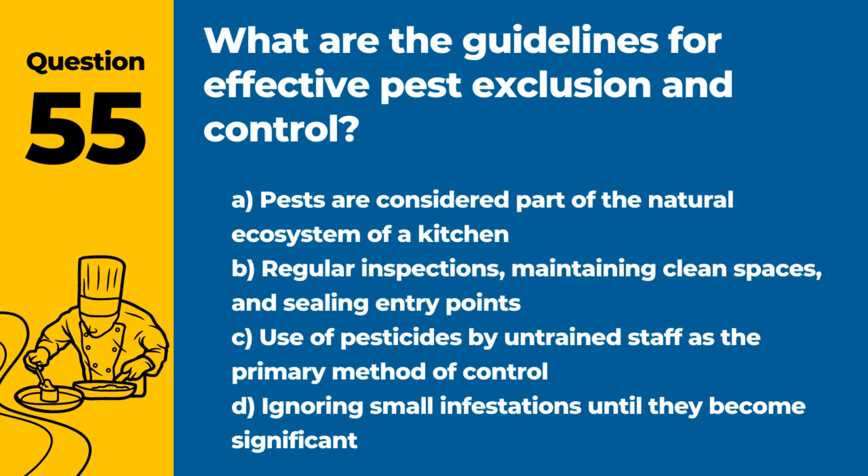Question 55. What are the guidelines for effective pest exclusion and control? Answer: B. Regular inspections, maintaining clean spaces, and sealing entry points. Effective pest management involves preventing access, eliminating food sources, and professional extermination when necessary.